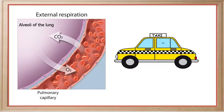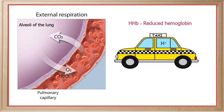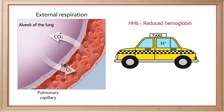Excess hydrogen ions are also carried to the lungs by hemoglobin. When hydrogen ions bind to hemoglobin, a molecule called reduced hemoglobin is formed. When reduced hemoglobin reaches the lungs, the hydrogen ion is released from the hemoglobin molecule and hemoglobin is now free to pick up oxygen.